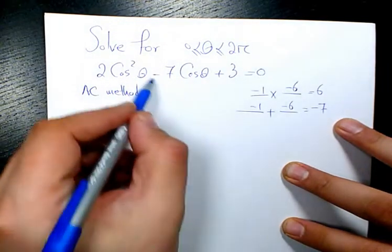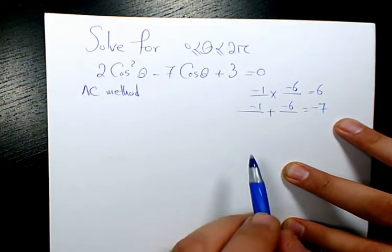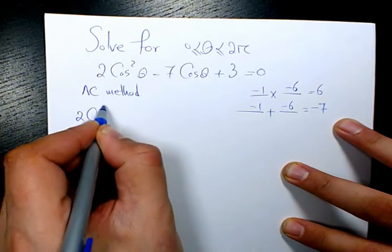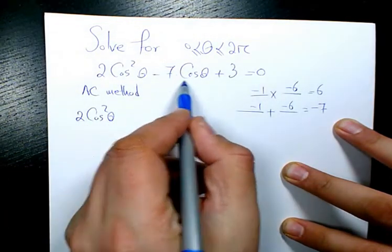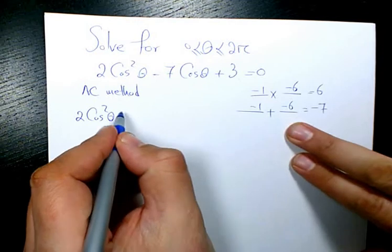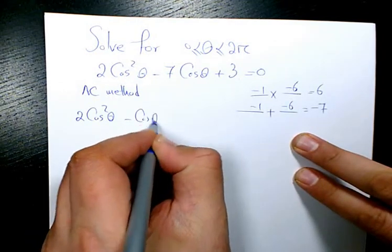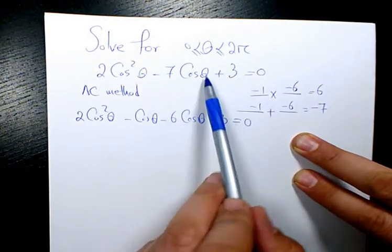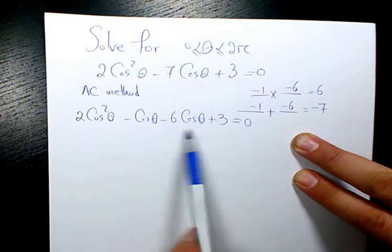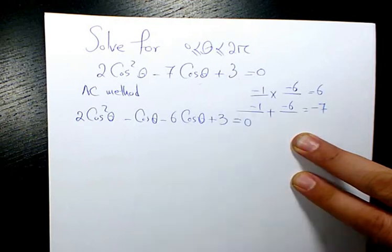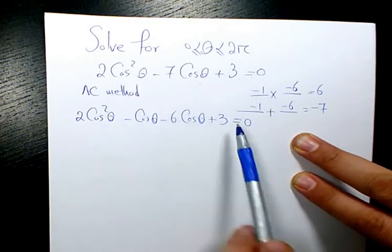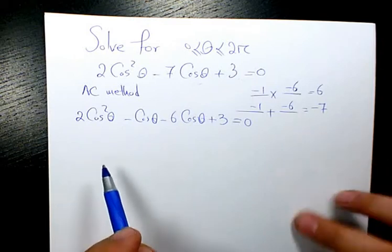Then I rearrange this equation. So I'm going to have 2 cosine squared theta. Instead of negative 7 cosine theta, I will substitute negative cosine theta and negative 6 cosine theta plus 3 equals to 0. So instead of one term here, I split it into two terms. It doesn't change anything, but changes it from trinomial to a polynomial with four terms here.